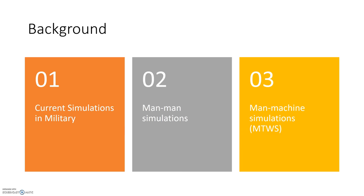For background on simulations: simulations have been used in the military for a long time and are divided under two categories — man-man simulations and man-machine simulations. Man-man simulations run through operations on the ground, mainly through training and practice exercises. Man-machine simulations include the Marine Tactical War Fighting Simulation; these occur mainly through dynamic simulations run on large computers.